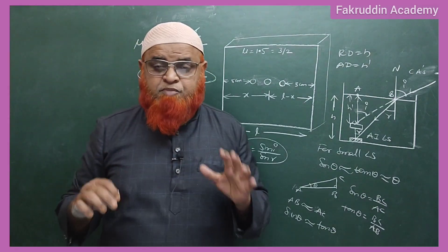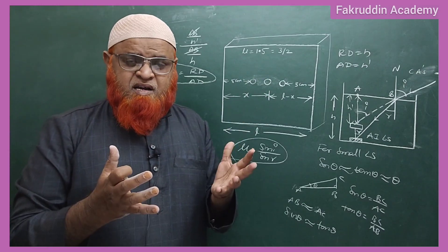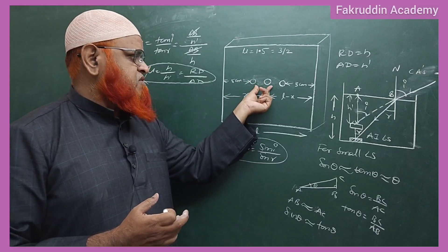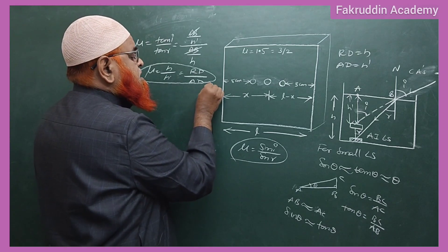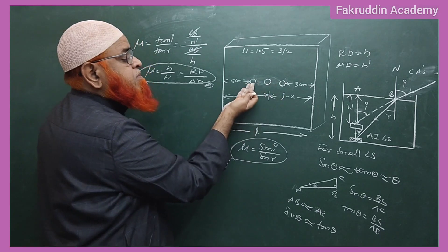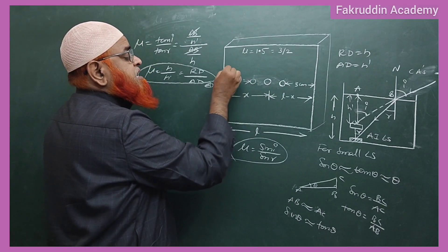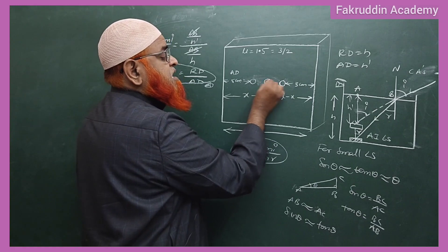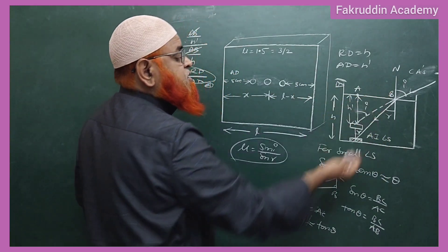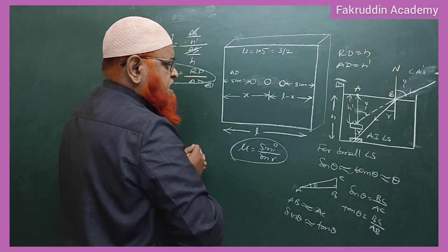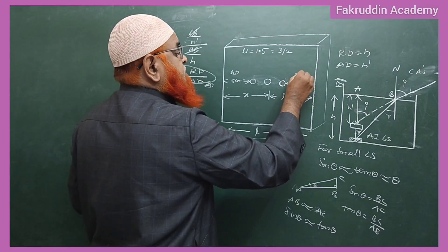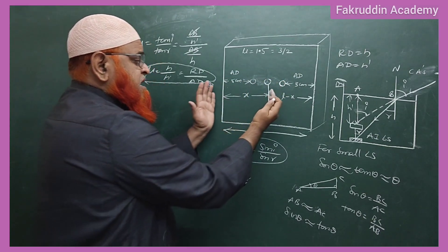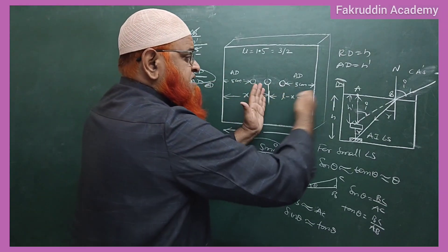This is the concept behind the problem I am going to solve. This is a cuboid-shaped glass slab with a small bubble inside. From one side, a person sees the bubble appearing to be closer — five centimeters — and that is called apparent depth. From the other side, the bubble also appears closer. The actual position of the bubble inside the glass slab is x from one side and L minus x from the other side — these are the real depths.